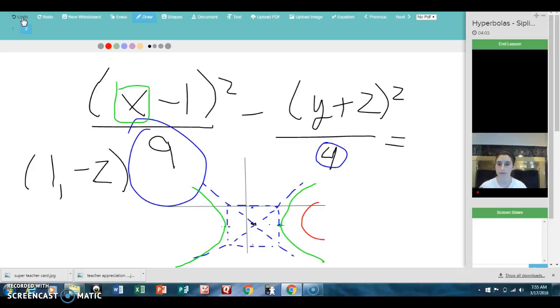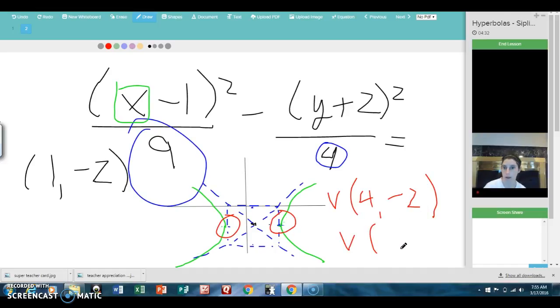Let's talk about the important features of our graph. The first thing we might be asked to find would be the vertices. Remember, the vertices are just here and here. So, we can just use our picture to figure out where they are. The center was at 1, and then I went over left and right 3. So, my vertices are at 4, negative 2. And the other one is going to be starting at 1 and going over 3 in the other direction, negative 2, negative 2.